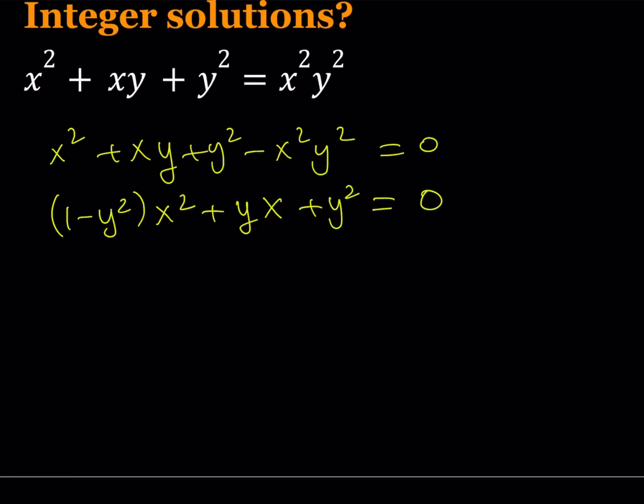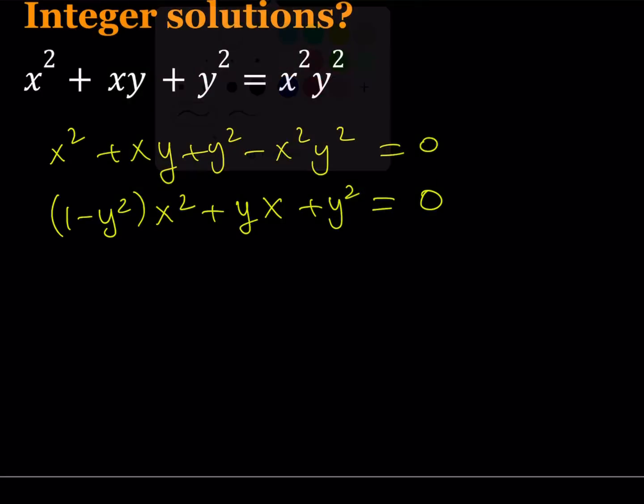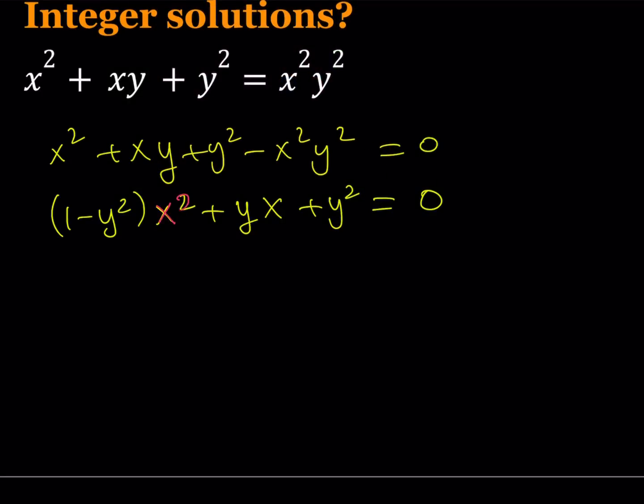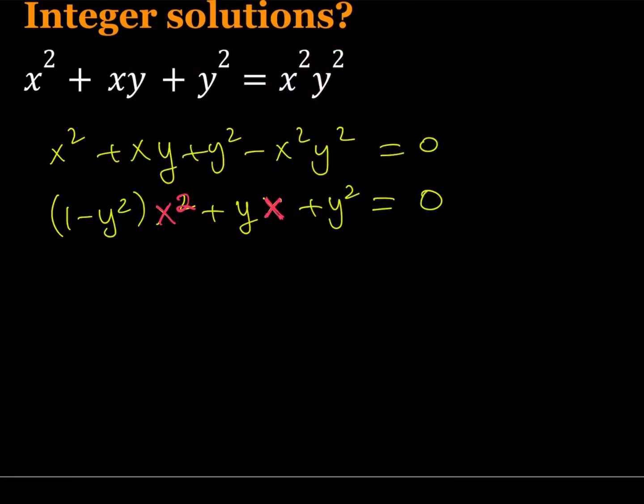So this is my quadratic in x. Notice that my main variable here is x, so everything else is treated as a constant. I have a quadratic in x and I'm going to be solving this quadratic using the quadratic formula. So I can write this as x equals negative b, which is negative y,